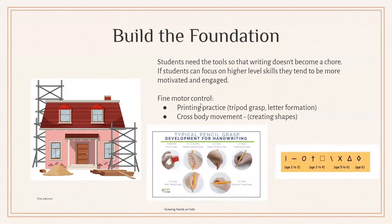Building a foundation of key skills is vital, especially in kindergarten and grade one. In order for automaticity to occur, we need to make sure fine motor skills are strong — that we're building that foundation, helping them hold a pencil, that they've got the right tools, and that this soon does not become a chore where all of their focus and energy is being placed. We also want to embed printing practice so they're grasping the pencil optimally, forming letters correctly, and have the concept of cross-body movement from left to right.